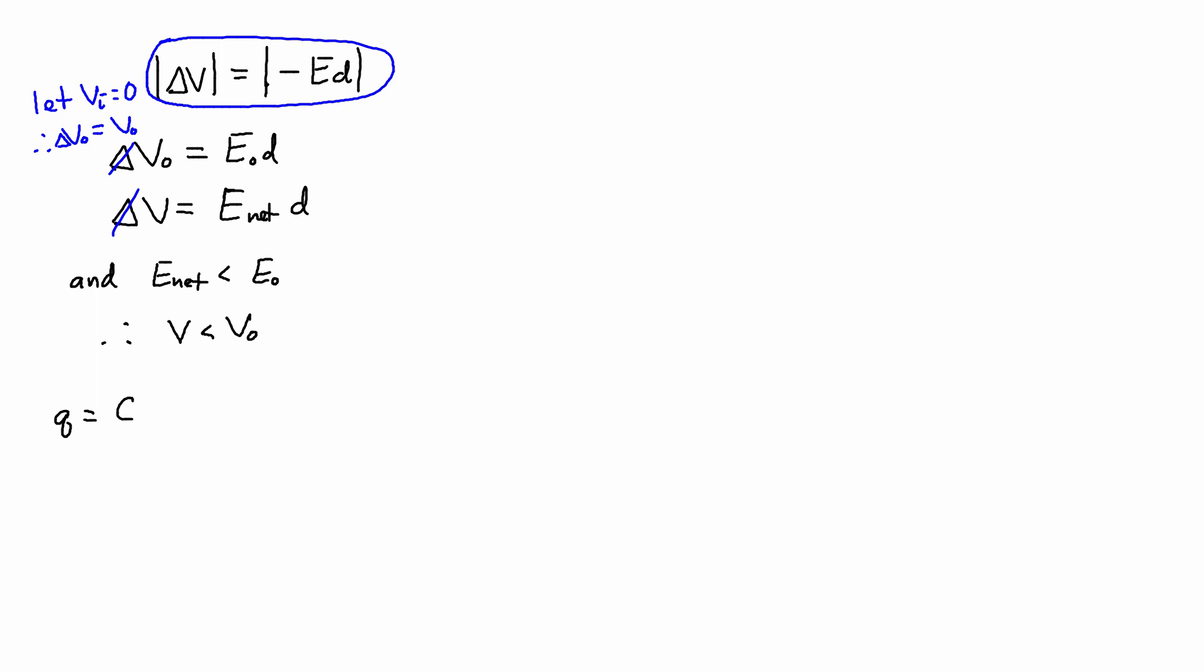So then if you remember that Q is equal to CV, and I can rewrite this and isolate the capacitance as Q over V. So C0, then, or the original capacitance, is Q0 over V0. And the new capacitance is Q over V. But remember, Q doesn't change, so it's really just Q0 over V. Therefore, remember that V is less than V0. And because V is in the denominator, the capacitance C is going to be greater than the original capacitance.